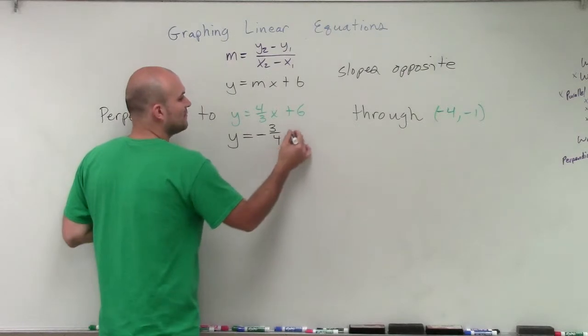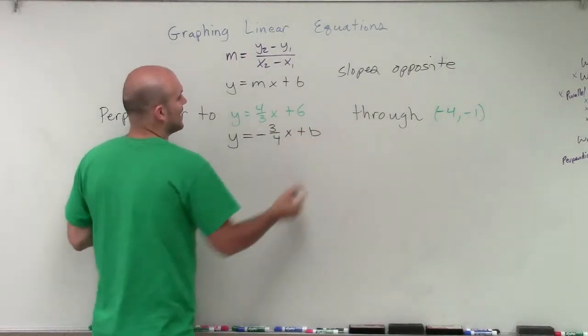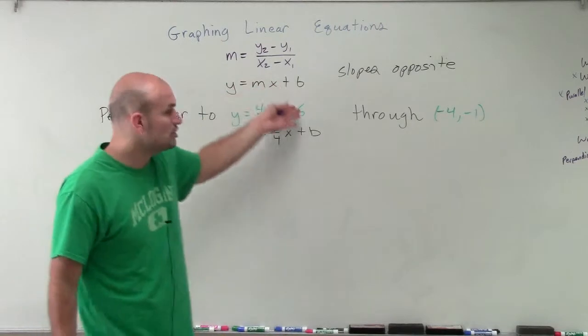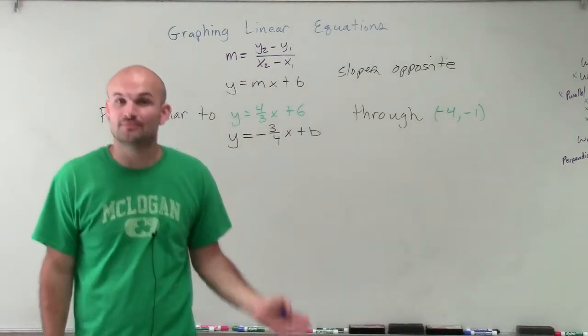So I'm going to have a negative 3 fourths x plus b. Now, I do not know what my new y-intercept is. It could be 6, but it also could be something different.